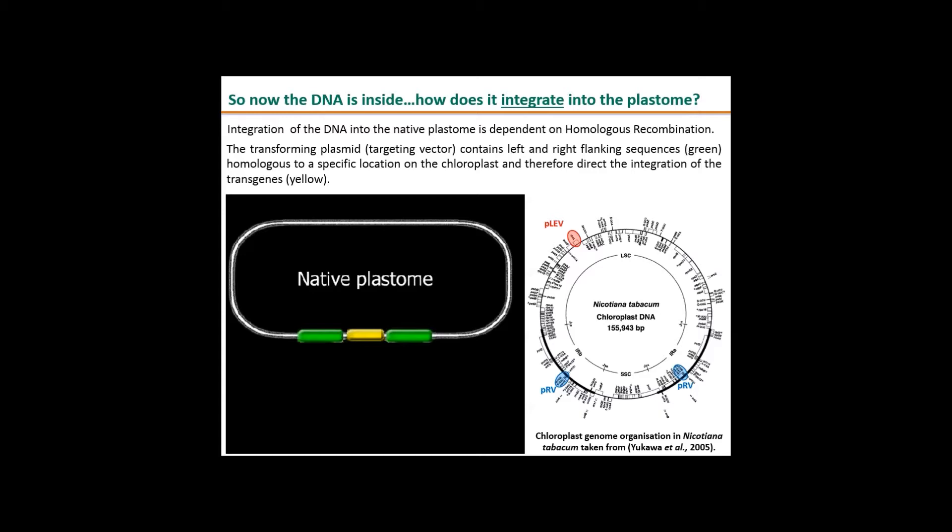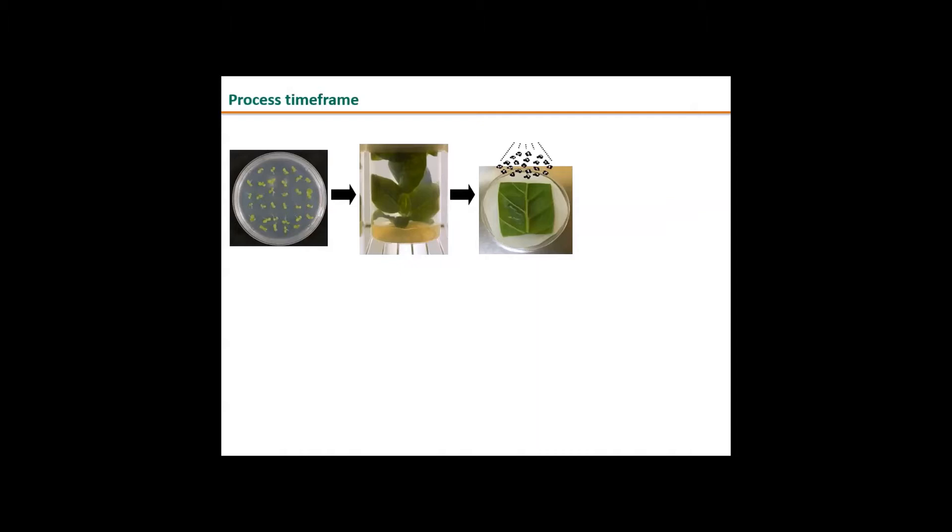About the process timeframe, you need to do the entire process in vitro using aseptic technique. First, you need to sterilize some seeds and grow them. Once they are around two weeks old, you can transfer them to a bigger pot, but they have to stay three to four weeks depending on the plant line you're using for bombardment. Then you cut the leaves and bombard them. That process takes less than a day. You can prepare your tungsten particles, coat them with DNA, and cut and shoot within the day. Then you have to cut those leaves in small little pieces and transfer them to new plates under selection.